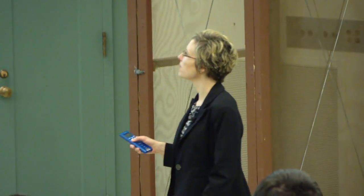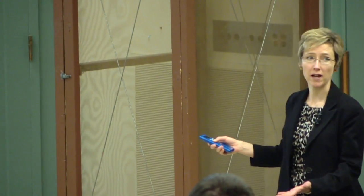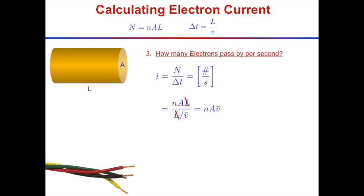I have the number of electrons in that volume and the time delta T it took for them to pass through the cross-sectional area. Electron current is the number of electrons divided by the time: N divided by delta T equals nAL divided by L over V. The L's cancel, V comes up top, and I get little n times A times V.